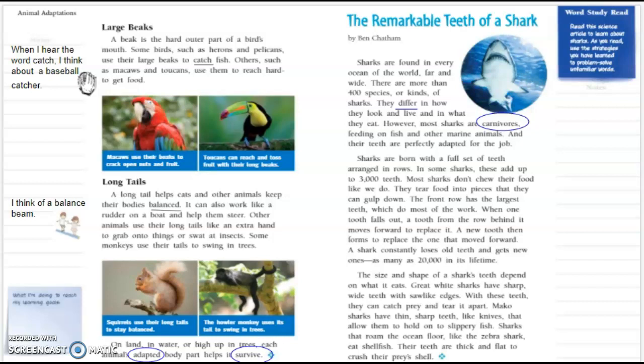A new tooth then forms to replace the one that moved forward. A shark constantly loses old teeth and gets new ones, as many as 20,000 in its lifetime. The size and shape of a shark's teeth depends on what it eats. Great white sharks have sharp wide teeth with saw-like edges. With these teeth they can catch prey and tear it apart. Mako sharks have thin sharp teeth like knives that allow them to hold on to slippery fish.